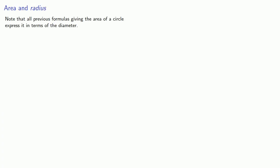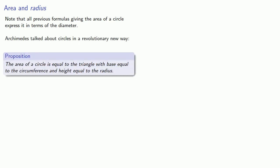First, note that all previous formulas for giving the area of a circle express it in terms of the diameter. Archimedes talked about circles in a revolutionary new way. The area of a circle is equal to the triangle with base equal to the circumference and height equal to the radius. And this is the first time that the radius shows up as an important part of the computation of the area of a circle.